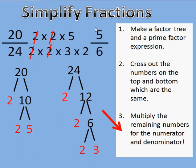If you want to get the most simplified fraction with the smallest numbers in the numerator and denominator that are still equivalent, make a factor tree, do our prime factor expressions, cross out the ones that are the same, and multiply the other ones.